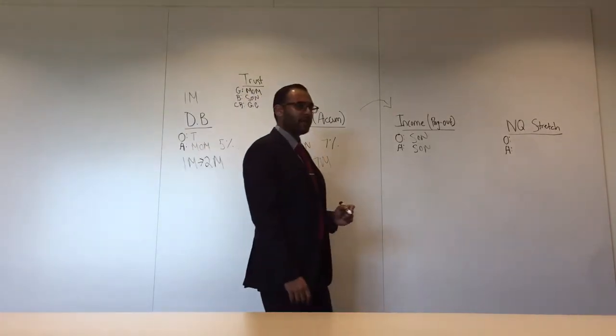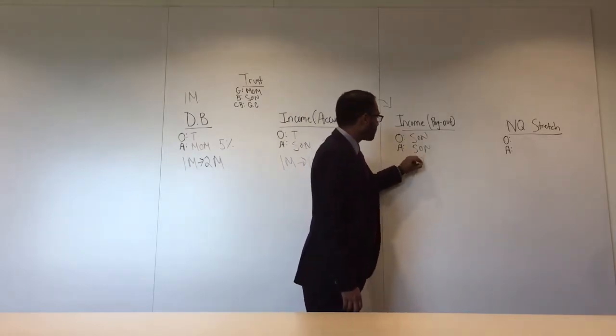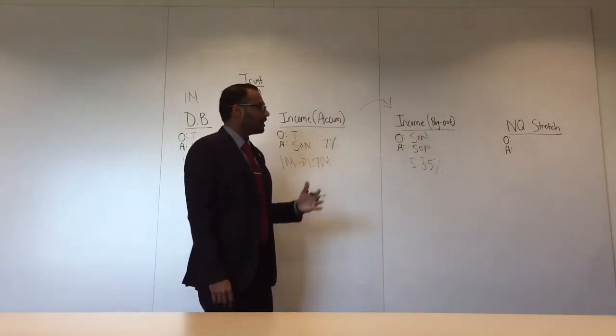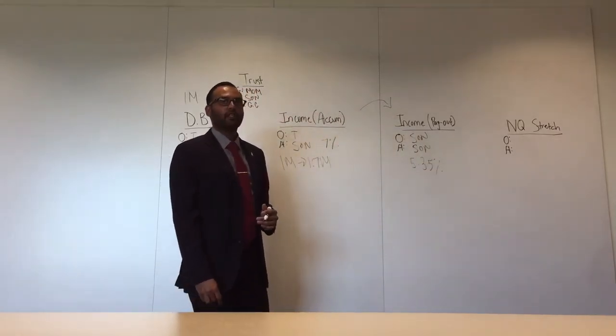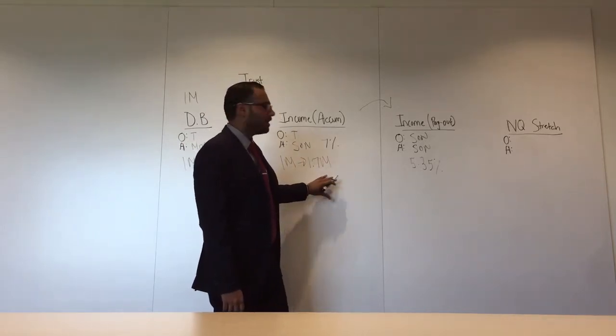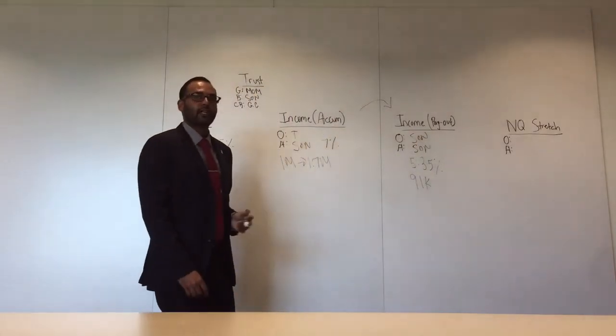Now let's talk a little bit about the payout. Son is age 65 and says I want to turn this on for income. With our lifetime income rider, you're guaranteed a 5.35% distribution at age 65. This $1.7 million now will generate $91,000 in income for your clients.